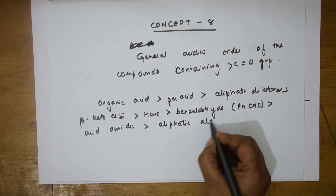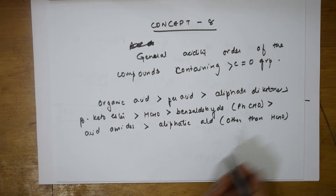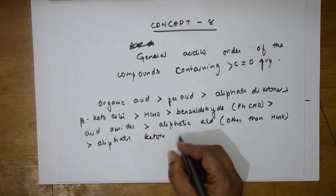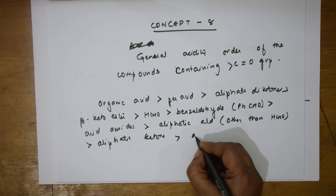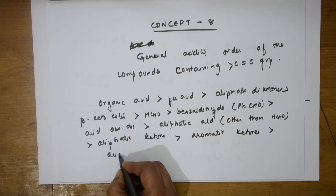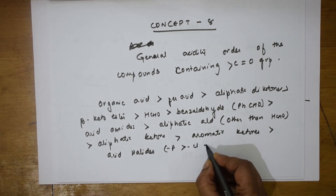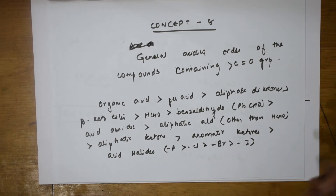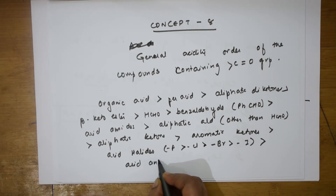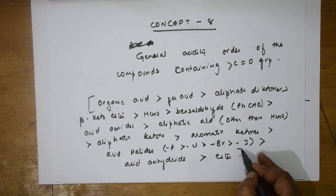Benzaldehyde (PhCHO) is greater than acid amides, greater than aliphatic aldehydes. Remember this order — other than formaldehyde, you can write from the paper with practice. Then aliphatic ketones, then aromatic ketones, greater than acid halides. In acid halides: fluorine greater than chlorine greater than bromine greater than iodine. Then acid anhydrides, which are greater than esters.